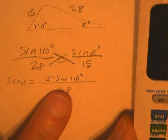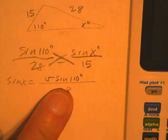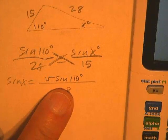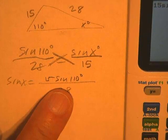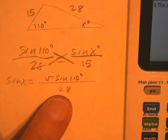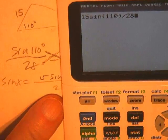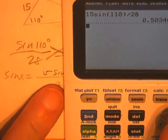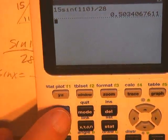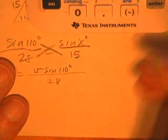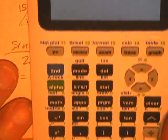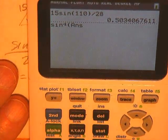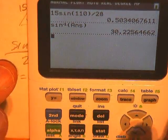Okay, so if this is bigger than 1, the triangle doesn't even exist, and we can say no solution. 25 sine 110 divided by 28. Okay, it wasn't bigger than 1. Second sine of the answer. By the way, answer's right there.